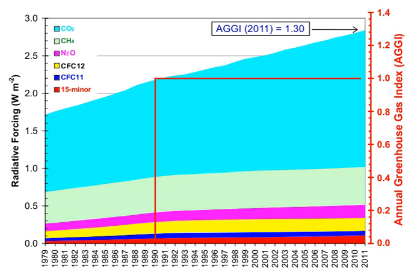The major atmospheric constituents — nitrogen, oxygen, and argon — are not greenhouse gases because molecules containing two atoms of the same elements such as N2 and O2 have no net change in the distribution of their electrical charges when they vibrate, and monatomic gases such as argon do not have vibrational modes. Hence they are almost totally unaffected by infrared radiation.